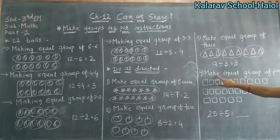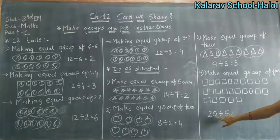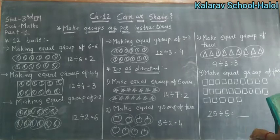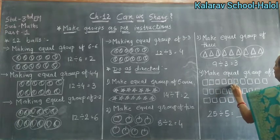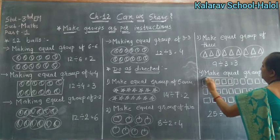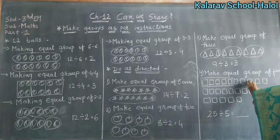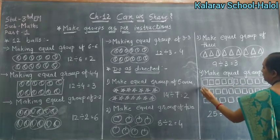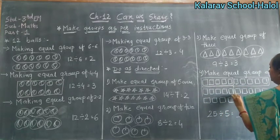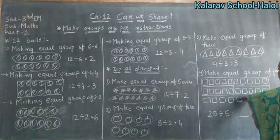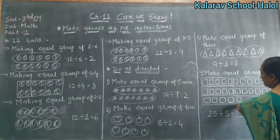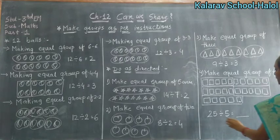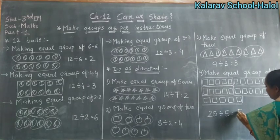Make an equal group of 5. Total squares: 25. So here: 1, 2, 3, 4, 5 — group 1. Then 1, 2, 3, 4, 5 — group 2. Then 1, 2, 3, 4, 5 — group 3. Then 1, 2, 3, 4, 5 — group 4. Then 1, 2, 3, 4, 5 — group 5. So here, how many groups? 5.